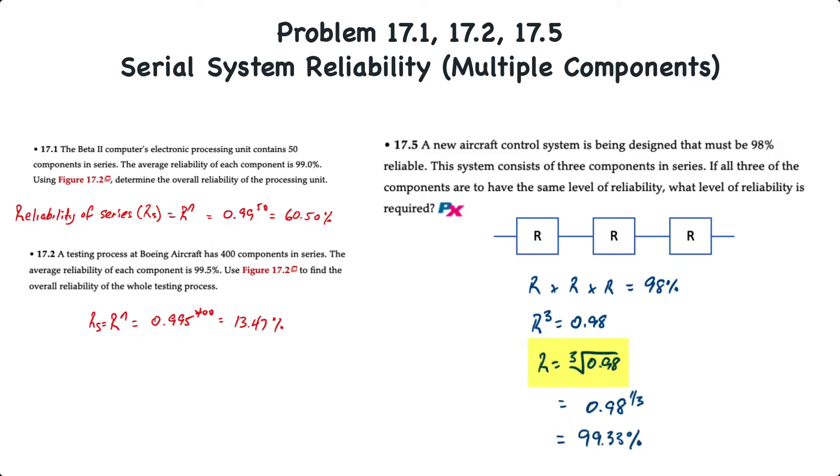Well, all we have to do is solve for r by taking the cube root of 0.98. If you're using a calculator that doesn't use cube roots, hopefully you have an exponent function that's equal to 0.98 to the exponent of one third, and that's equal to 99.33% reliability. And that's how you determine the reliability of systems in series.